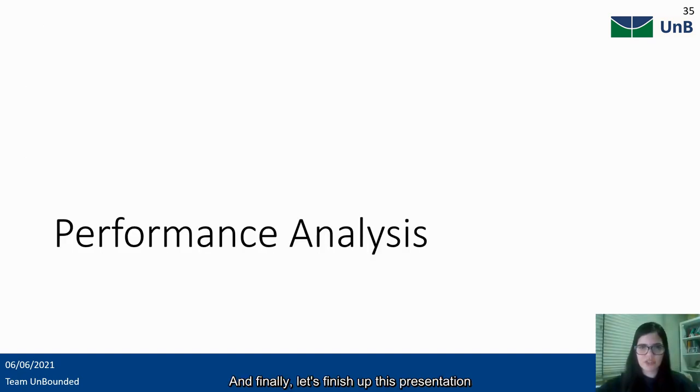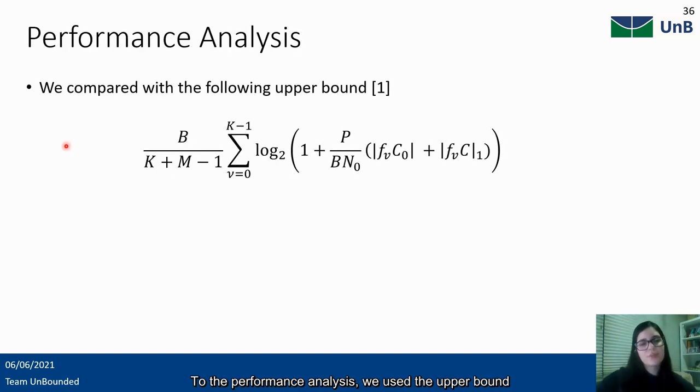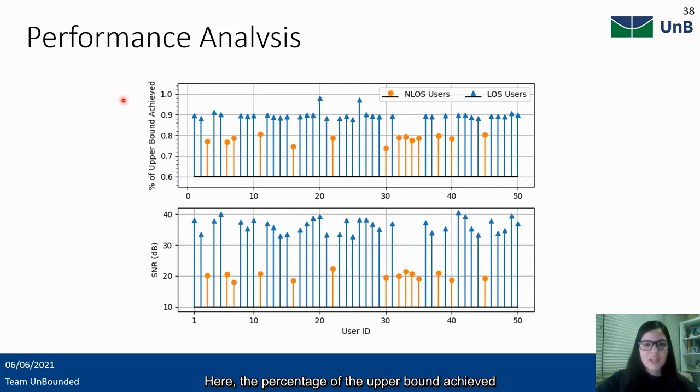Let's finish up this presentation with a brief performance analysis. For the performance analysis, we use the upper bound proposed by Emil for the comparisons that follow. Here, the percentage of the upper bound achieved and the estimated SNR for each user are shown. The n-loss users achieve between 75% to 80% of the upper bound, and the loss users achieve around 90% of the upper bound, with two outlier users.